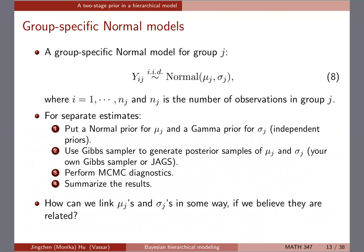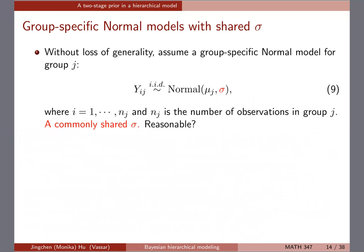So how do we link that if we believe the groups are related? Let's start simple: just work with mu for now. Let's assume sigma is the same across groups — it's still random and we'll put a prior for it — but let's focus on mu so we can dig into the assumptions we make when using a hierarchical prior.